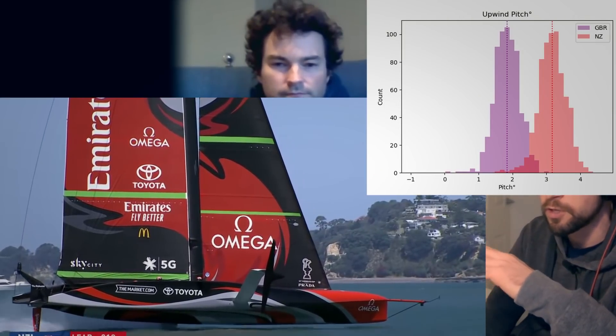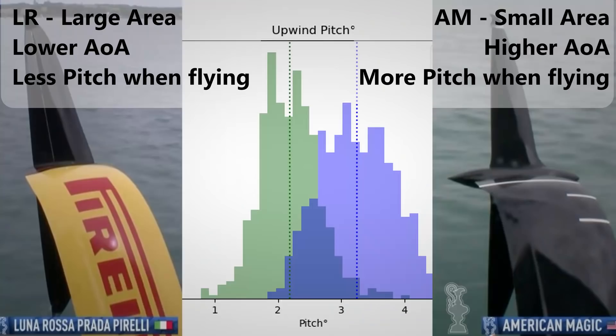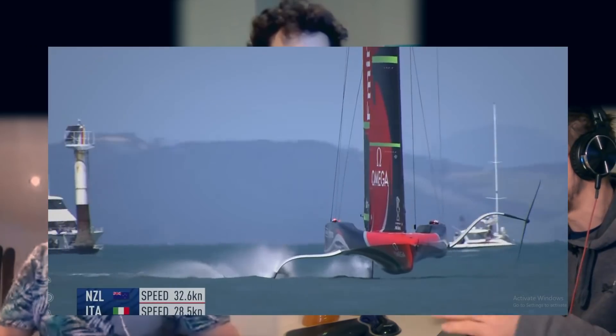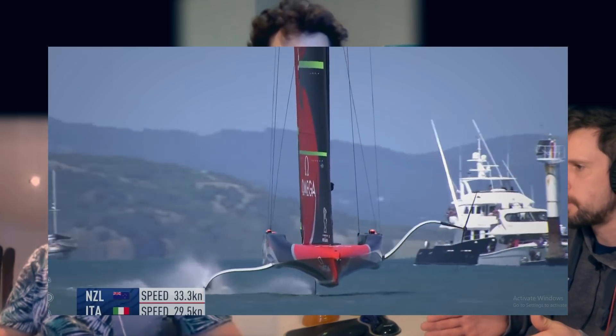We can get quite a good idea of what the angle of attack of these foils are by the pitch we're seeing the boats sailing around with. This allows us to look at pitch footage. We do suppose that boats with smaller foil areas are having to run a greater angle of attack relative to the hull to get the lift, and we also see those boats running most pitched down at the front as well. There is a correlation there, though it is muted also by cant — when the foils are out to the side, if you have that angle of attack you'll need to be pitched down to level out. We also see some positive leeway from Emirates Team New Zealand — it often looks like they're crabbing up as well.